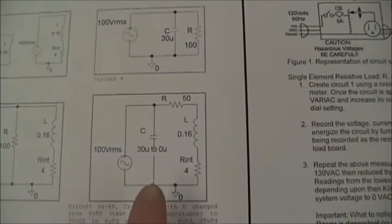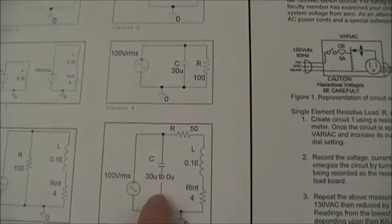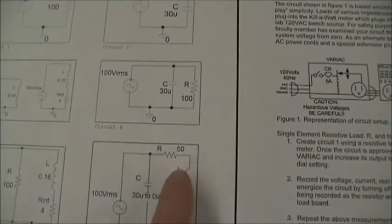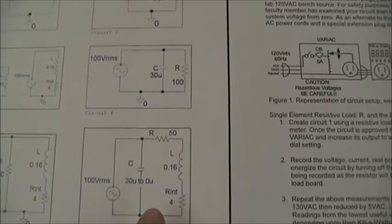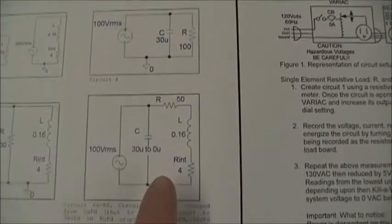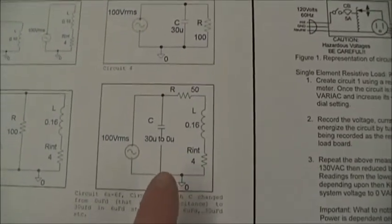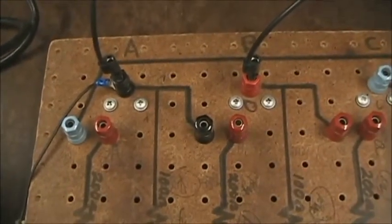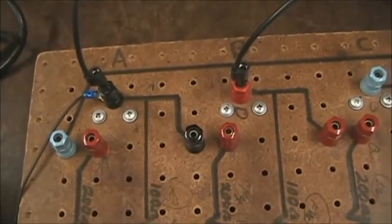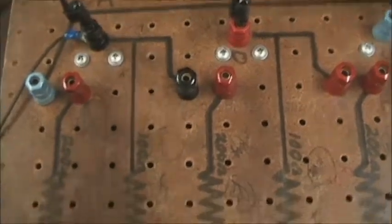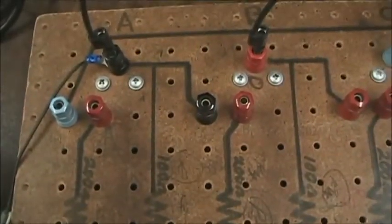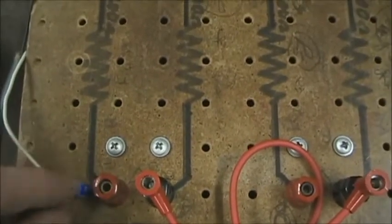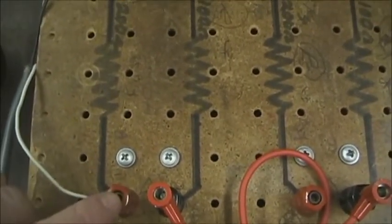The final circuit involves a capacitance in parallel with the 50 ohm resistor in series with an inductor. We need to make a couple special modifications for this measurement, so let's take a look at those.